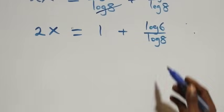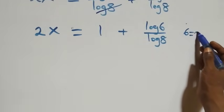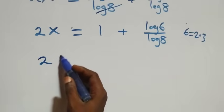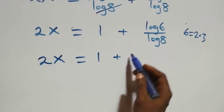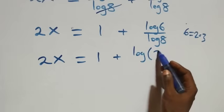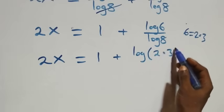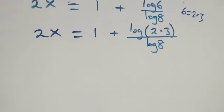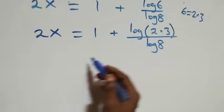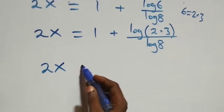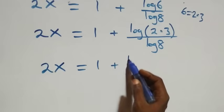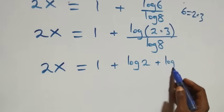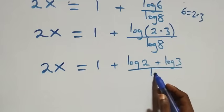From here we express 6 as 2 times 3, so 2x equals 1 plus log(2 × 3) over log 8. Applying the product rule of logarithms again, this becomes 2x equals 1 plus (log 2 + log 3) over log 8.